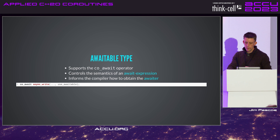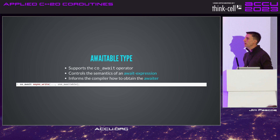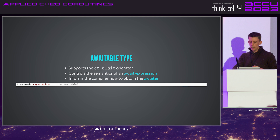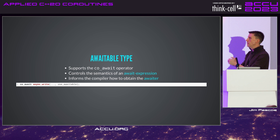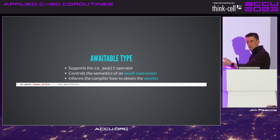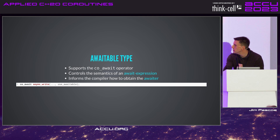Awaitable types: an awaitable type is something that supports the co_await operator — you can call co_await on it. It controls the semantics of an await expression — the expression that has co_await at the start. The main job of the awaitable type is to inform the compiler how to obtain the awaiter, which interfaces the coroutine mechanics provided by the language and compiler to your library or code.